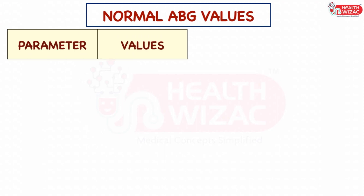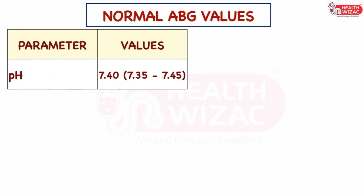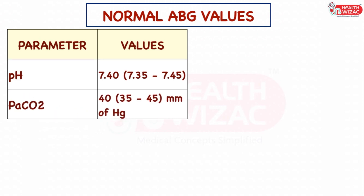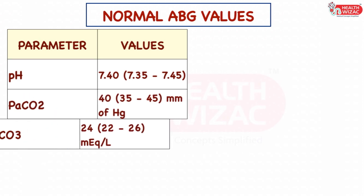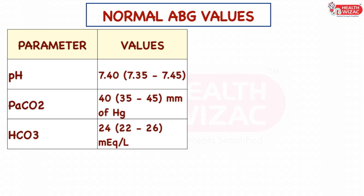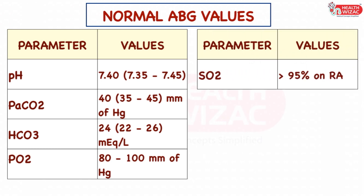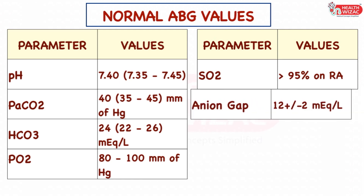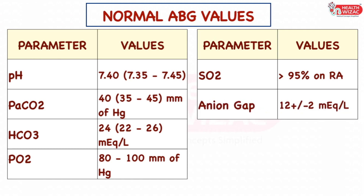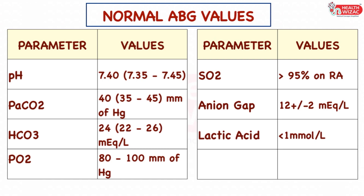Now let's look at the normal parameters of ABG. Normal pH ranges between 7.35 to 7.45. Normal PaCO2 ranges between 35 to 45 mmHg. Normal bicarbonate ranges between 22 to 26 mEq/L. Normal PO2 ranges between 80 to 100 mmHg. Normal saturation is more than 95% on room air. Normal anion gap is 12 ± 2 mEq/L. Normal lactic acid is less than 1 mmol/L.